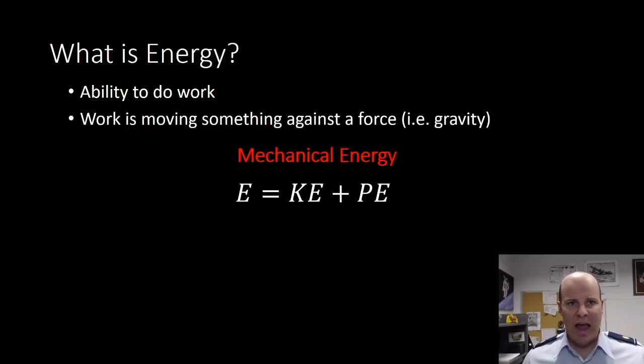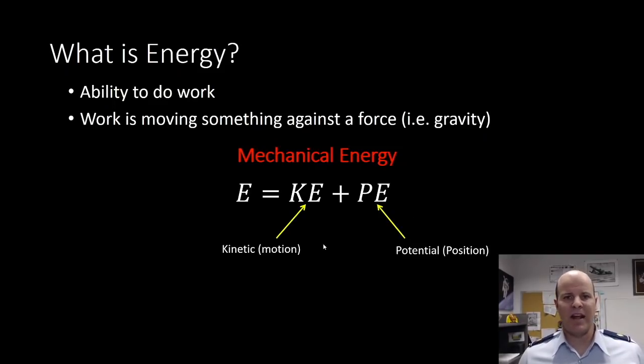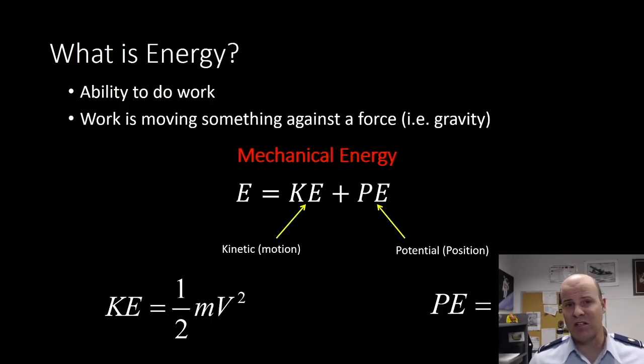What is energy? Energy is the ability to do work where work is moving something against a force, i.e. moving a rock from the bottom of a mountain to the top of a mountain. You've done work on that rock. So mechanical energy is going to be the summation of both our change in potential and our change in kinetic energy. So kinetic energy is one-half mv squared and potential energy is mass times the acceleration due to gravity times the differential in height.